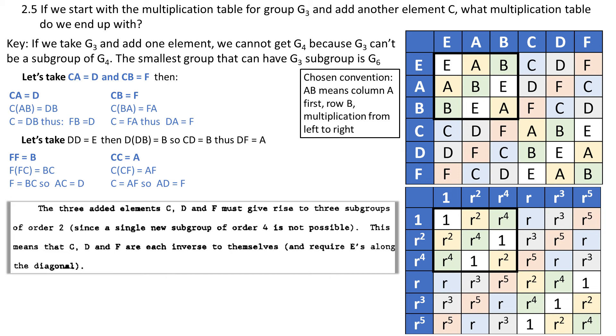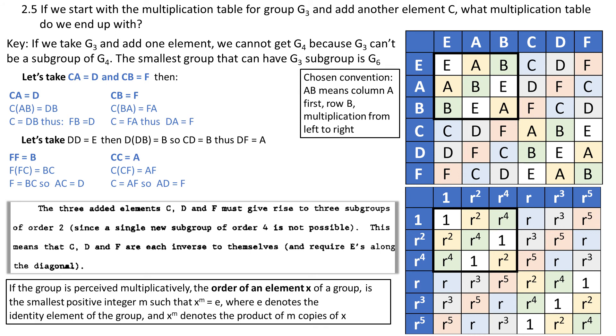He writes that CDF must give rise to three subgroups of order 2 since a single new subgroup of order 4 is impossible. It is true that a new subgroup of order 4 is impossible, but to my mind it does not imply that CDF must have order 2. In fact, C and F, as you can see, can have order 6. And in case you forgot, order of an element X is the smallest positive integer M such that X to the power of M equals E, where E is the identity element. So I don't think that the solution is right, because to my mind the question is not of a type for all, but there exists. And we found elements that would make it work for C6.